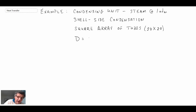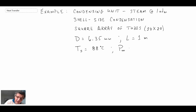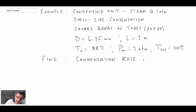The outside diameter of the tube is 6.35 millimeters and the length of the tube bundle is 1 meter. The surface temperature of the tubes is maintained at 88°C, and given that we're dealing with atmospheric pressure, the saturation temperature of the steam is 100°C. What we're asked to find is the condensation rate, M-dot, in kilograms per hour.